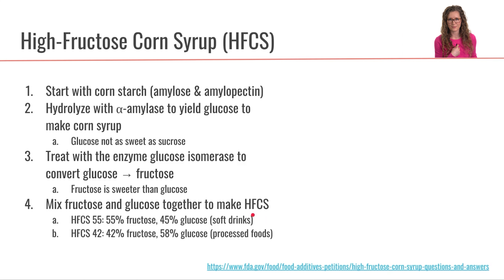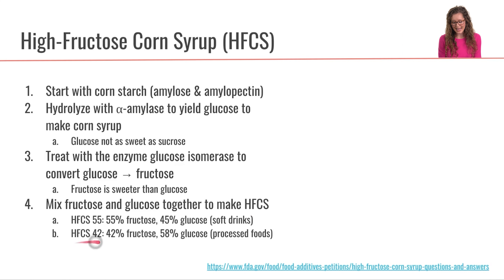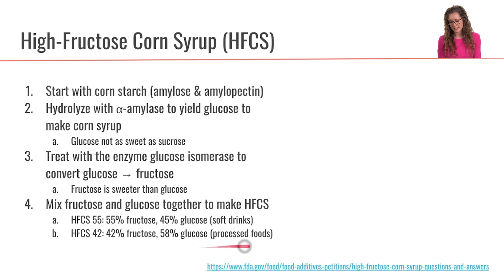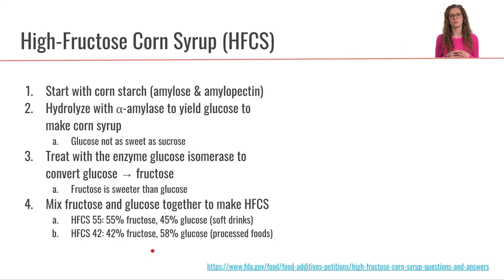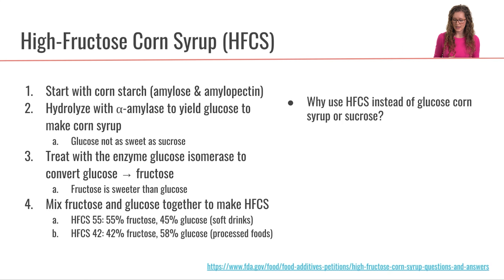The other type of high fructose corn syrup is HFCS 42, composed of 42% fructose and 58% glucose. This is the type that is frequently added to solid food products and processed foods.